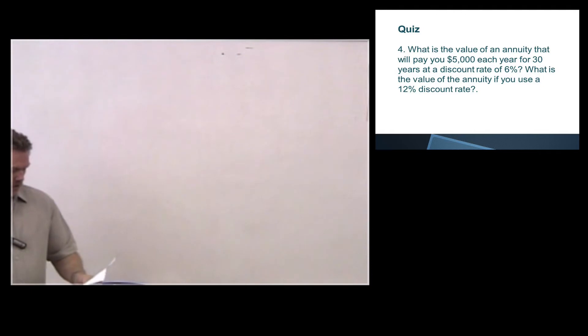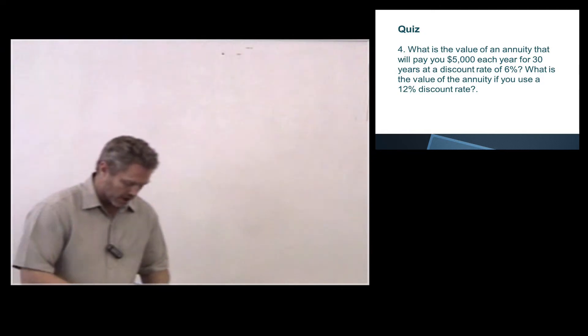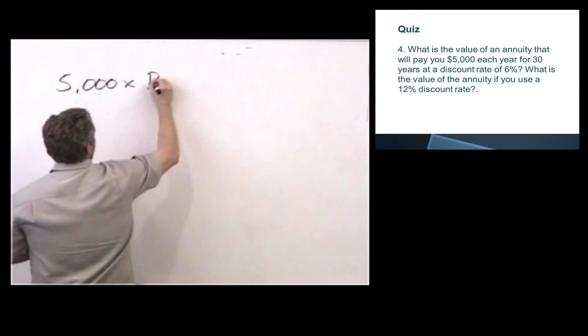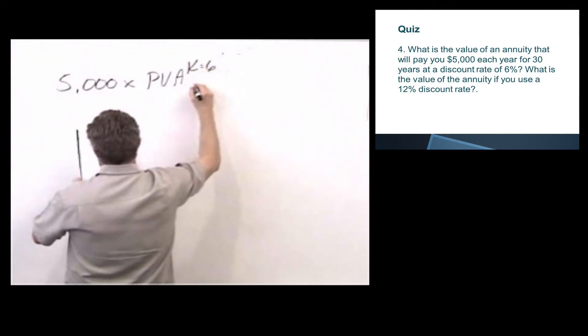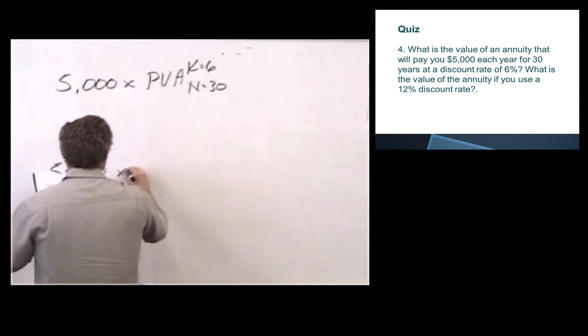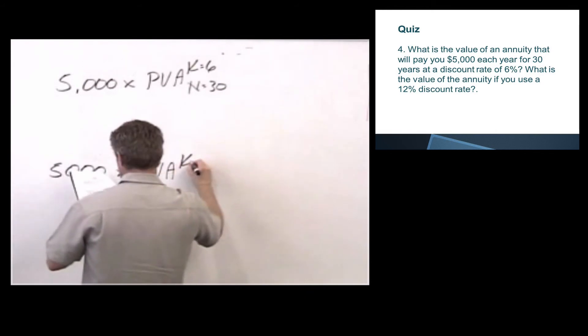Question 4. What is the value of an annuity that will pay you $5,000 each year for 30 years at a discount rate of 6%? What is the value of an annuity if it's a 12% discount rate? Okay, so we know we're getting an annuity, which means several payments. We're going to get $5,000 each year for 30 years. We want to know what its value is today. So we're going to take $5,000 times present value of an annuity, K equals 6, N equals 30, and $5,000 times present value of an annuity, K equals 12, N equals 30.